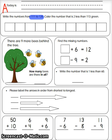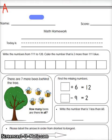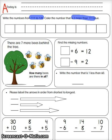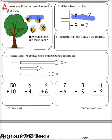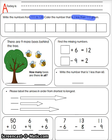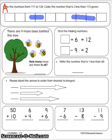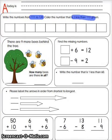Side B also says the same but the difference is two more than 111. For side A it says two less, B says more, A says less. So we are going to work on side A first. For both of them we have the same day.